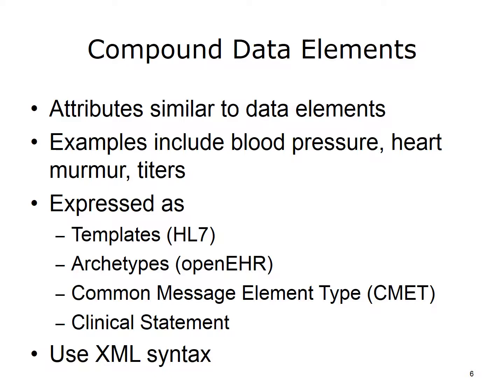A compound data element is a structure that includes other data elements. The attributes are similar to those for simple data elements. The advantage of a compound element is that linked components with tags can be included as an encapsulated set, but can be addressed as a whole unit or by components. An example is blood pressure. The parts of a blood pressure are systolic, diastolic, which arm, position of the patient, cuff size, manual, or automated. Other examples include a heart murmur or titers.